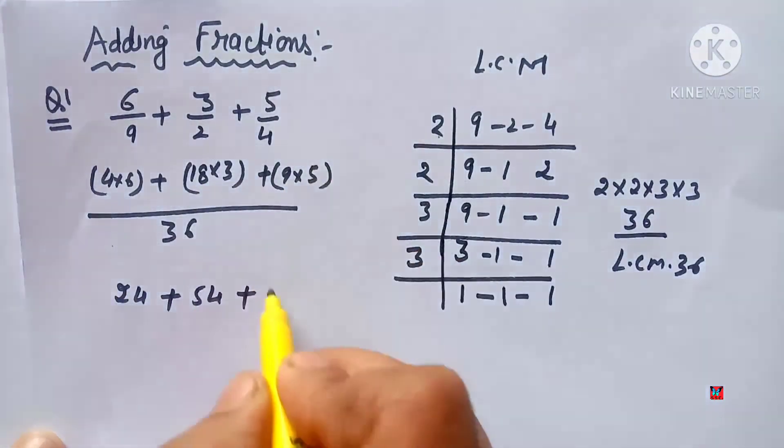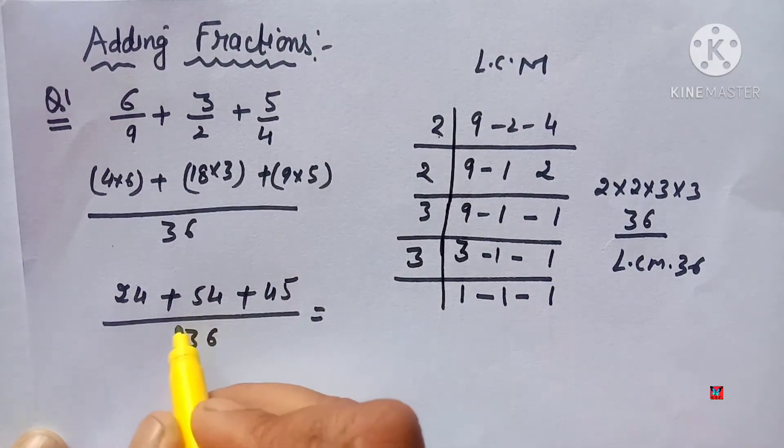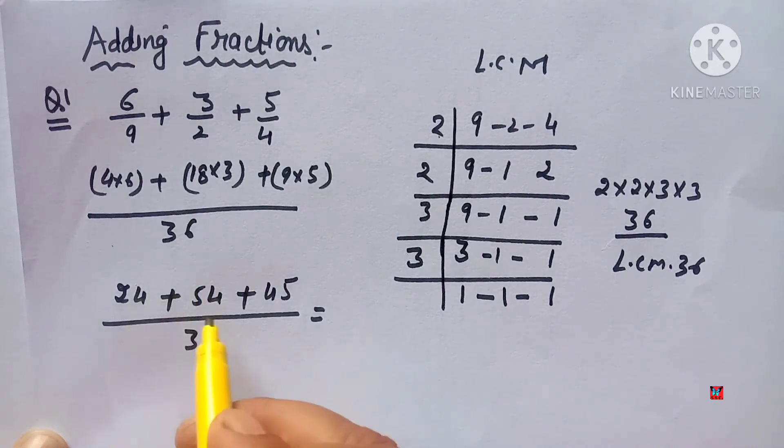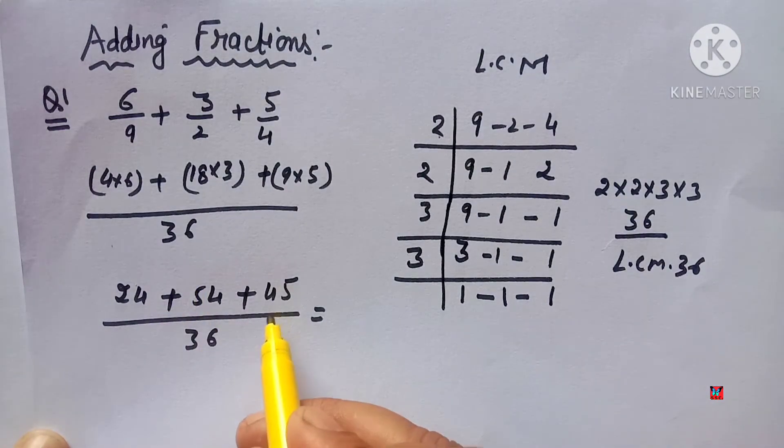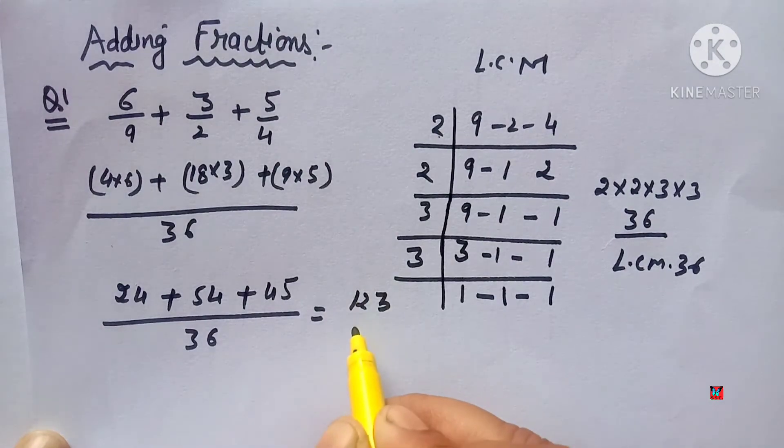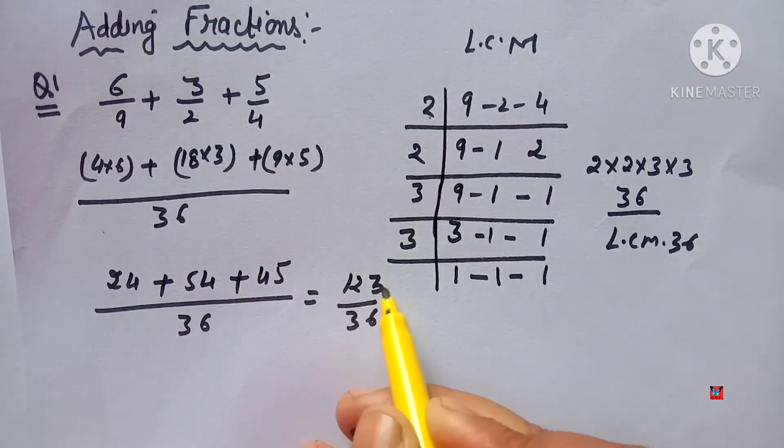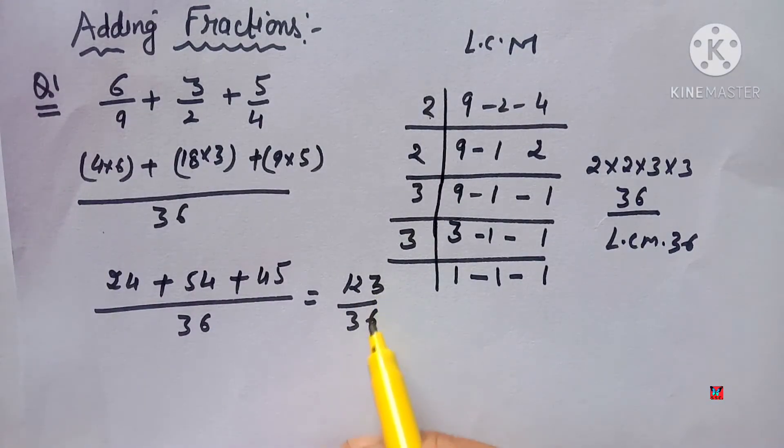So we get 24 plus 54 plus 45, all over denominator 36. When you add these: 24 plus 54 plus 45, it comes out to be 123 upon 36.